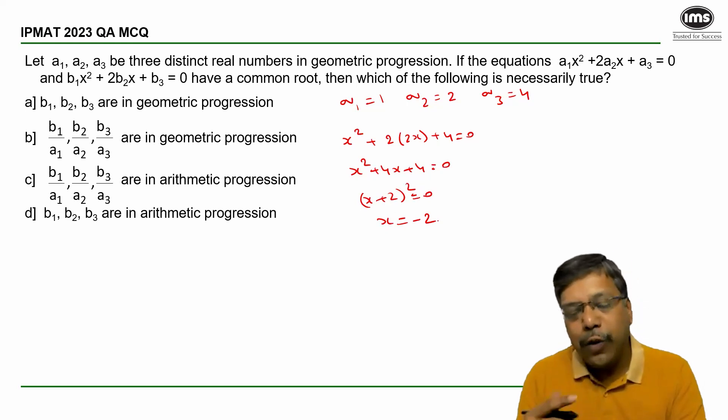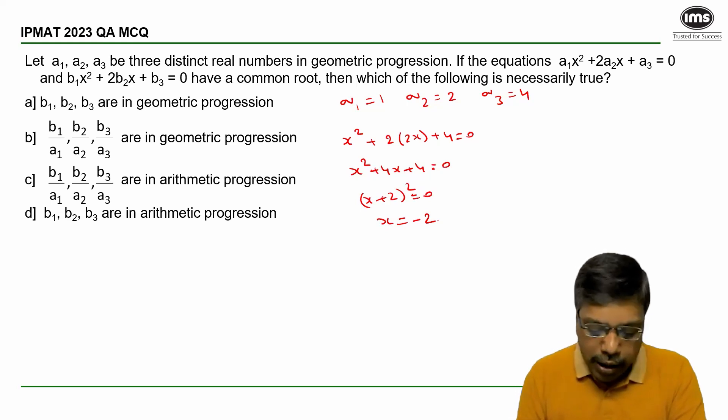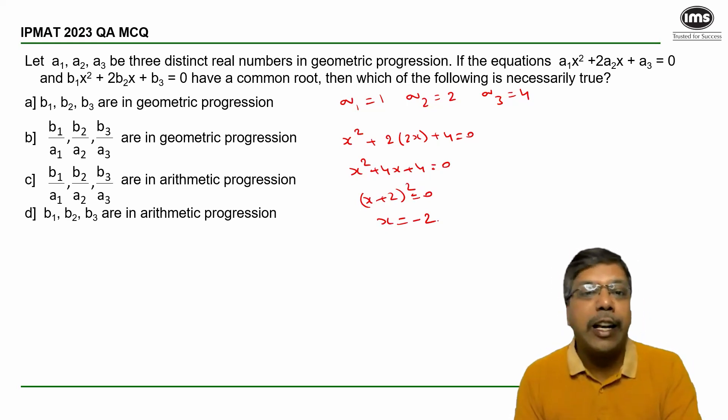Since the first equation has only one root and both equations have a common root, x = -2 must definitely be a root of the second equation as well.